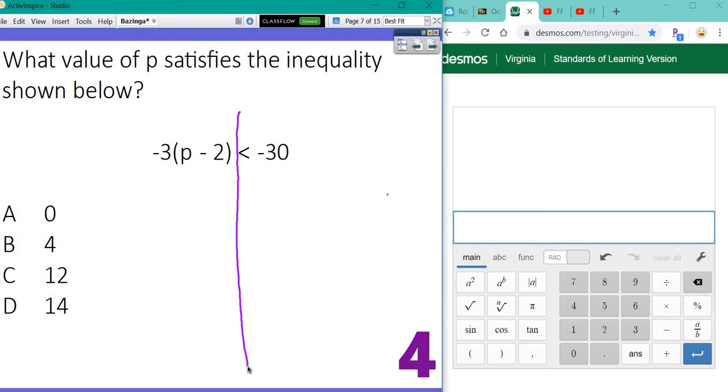Now when I look at both sides of that inequality, I see that there's parentheses on one side. So the first thing I'm going to have to do is distribute. So I've got negative 3 times P, which gives me negative 3P. Then the second thing I've got, Shannon, is negative 3 times a negative 2. That gives me a positive 6.